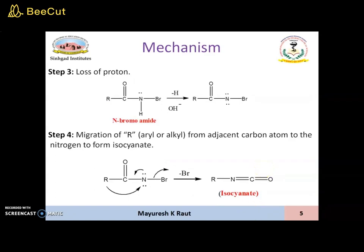Step 3 involves loss of a proton from the N-bromoamide, so it will become RCONBR. Step 4 is nothing but migration of the R group from the adjacent carbon atom to the nitrogen, leading to formation of isocyanate. In this case the R can be either alkyl or aryl group. The R group migrates to the nitrogen atom and at the same time bromine is leaving, leading to the formation of isocyanate.